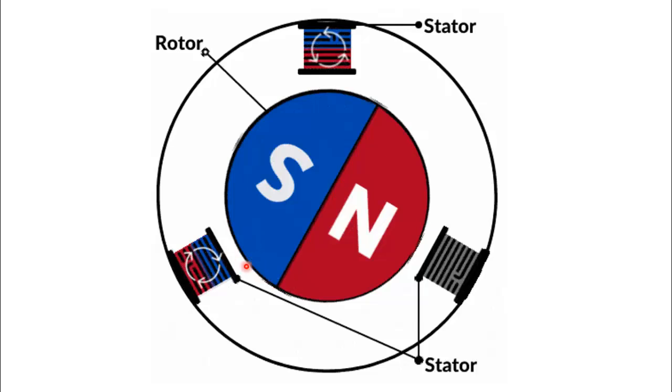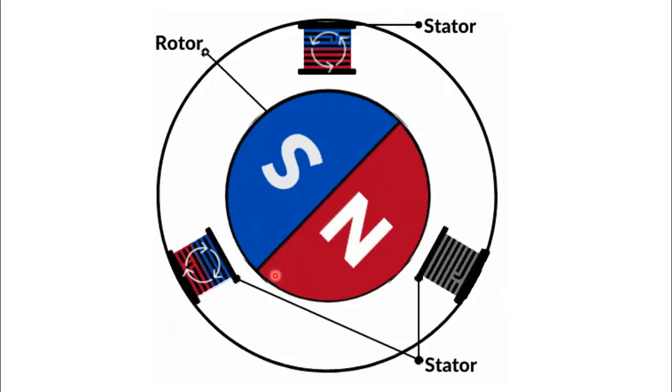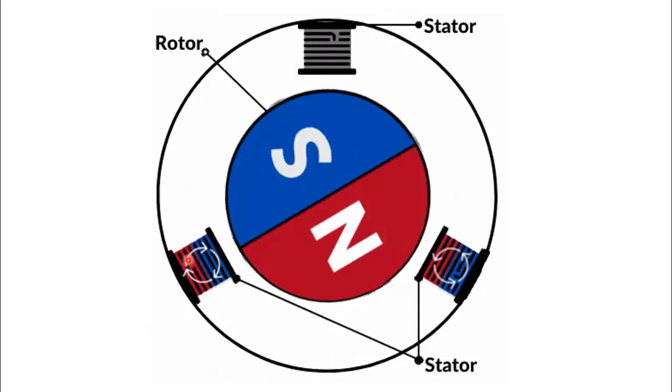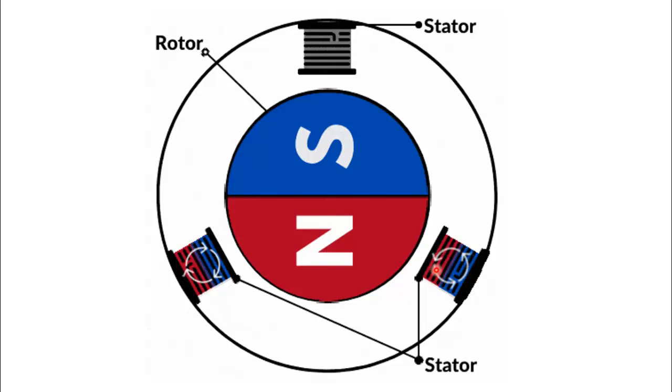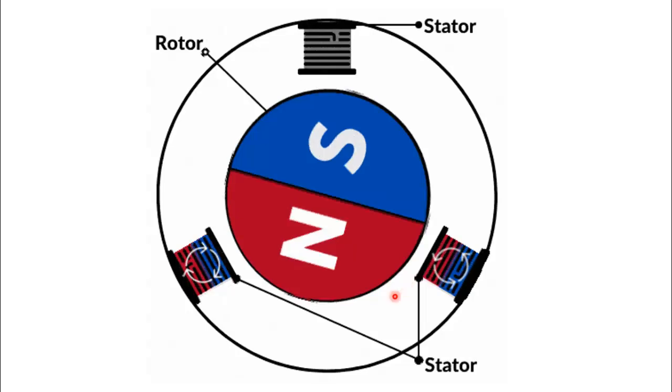We normally energize two poles of the stator at the same time. One pole is used to attract while the other pole is used to repel the rotor. In this way, the torque of the motor is also increased by energizing two coils of the stator at the same time.